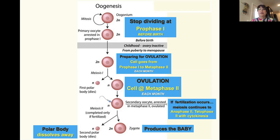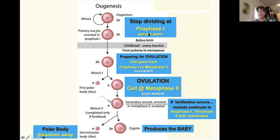With girls, we are born with all the eggs — or all the cells that will become eggs — that we're going to need. Boys have nothing there at birth. Girls are born with everything, which is why it can create problems as you get older, because all those eggs are that old plus one year. While you're in utero before birth, you go through interphase one, prophase one, do the crossing over, and then stop.